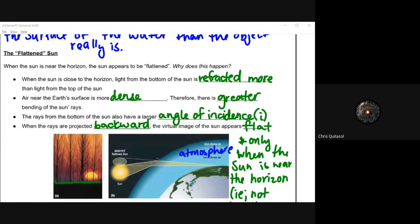The flattened sun: when the sun is near the horizon, the sun appears to be flattened. This happens as a result of light from the bottom of the sun refracting more than the light from the top of the sun. Air at the earth's surface is more dense than the air at the top of the atmosphere, so therefore there's a greater bending of the sun's rays. When rays are projected backwards, that virtual image of the sun appears flat.